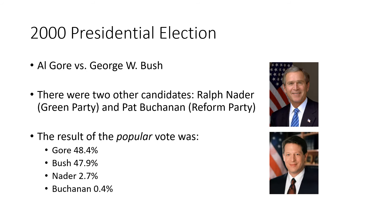Looking at the 2000 presidential election, this was controversial for a different reason. It was Al Gore for the Democratic Party versus George W. Bush for the Republican Party, but there were also two other candidates: Ralph Nader for the Green Party and Pat Buchanan for the Reform Party. Looking at just the popular vote, Al Gore got 48.4% and George Bush got 47.9%, so both received less than half of the vote, with just over 3% going to minor party candidates. The argument often gets made that those minor party votes could have been assigned to one of the other candidates, which could have changed the outcome.